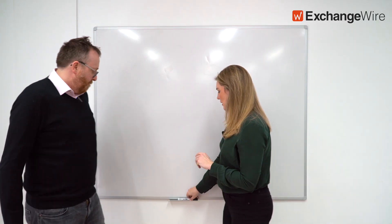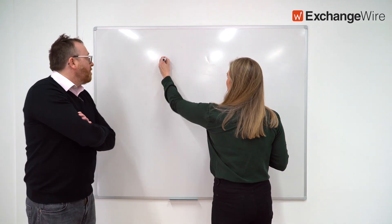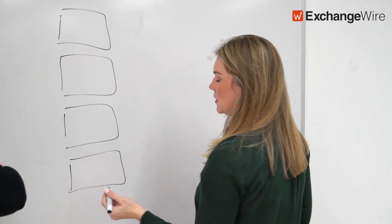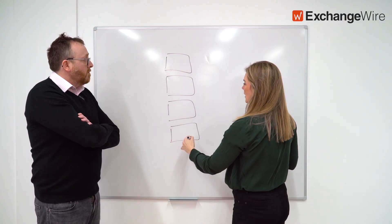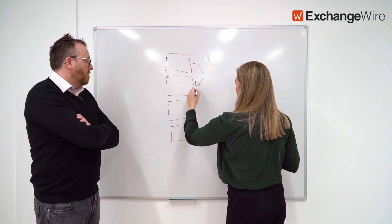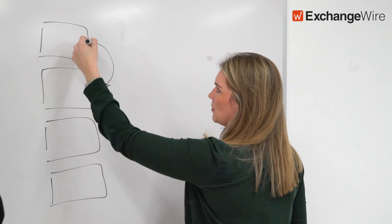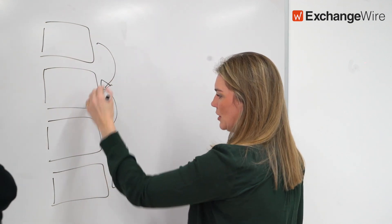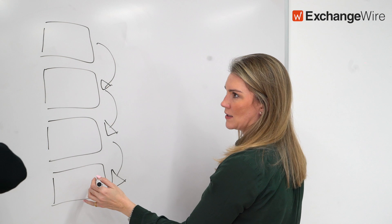Back in the day in programmatic and also now in TV, you have your ad stack set up like this. You'll get your bids in and you have your different SSPs that you give your priority to, maybe you've got your PMP and your PG here.